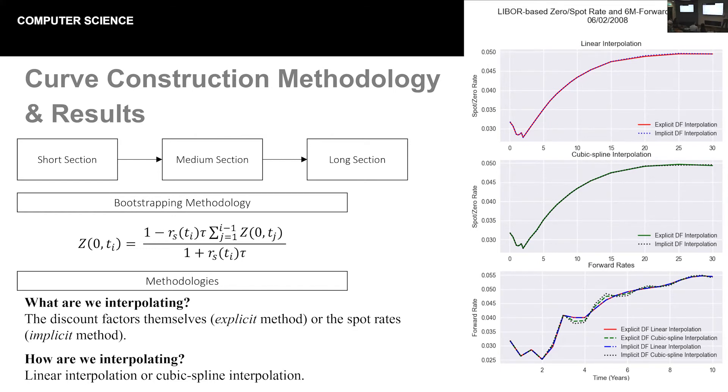Unfortunately, not all maturities of swaps have liquid markets. Now, if we have a 10-year swap, that might be liquid. A 15-year swap may be liquid. But how do we bridge the gap between the two if we need something like six monthly discount factors? And the answer is we interpolate. But in order to do so, we have to ask ourselves two questions. Firstly, what are we interpolating? Are we interpolating the discount factors themselves in what we've termed the explicit method? Or are we going to interpolate the spot rates, convert those into discount factors, and then go from there in what we've called the implicit method?